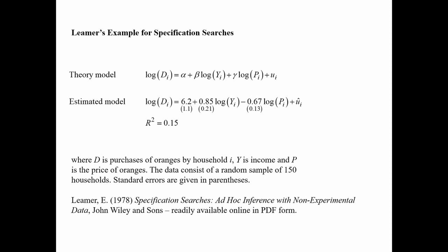He starts off with a basic bit of theory: a log-linear demand curve where demand is a function of income and price and a random error term UI. What we're interested in is estimating the slope parameters beta and gamma, which are the income and price elasticities respectively. He has a cross-section sample of 150 households, and he estimates this equation getting pretty reasonable results — an income elasticity of 0.85 with a standard error of 0.21, and a price elasticity of 0.67 with a standard error of 0.13.